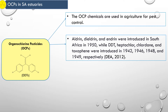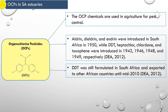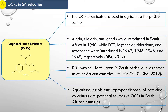OCPs such as Aldrin, Dieldrin and Endrin were introduced in South Africa in 1950, while DDT, heptachlor, chlordane and toxaphene were introduced in 1942, 1946, 1948, and 1949 respectively. Some reports in literature showed that as at 2017, DDT was used for mosquito control in some areas in KwaZulu-Natal and Mpumalanga provinces. DDT was still formulated in South Africa and exported to other African countries until mid-2010. Agricultural return flow and improper disposal of pesticide containers are potential sources of OCPs in South African estuaries.